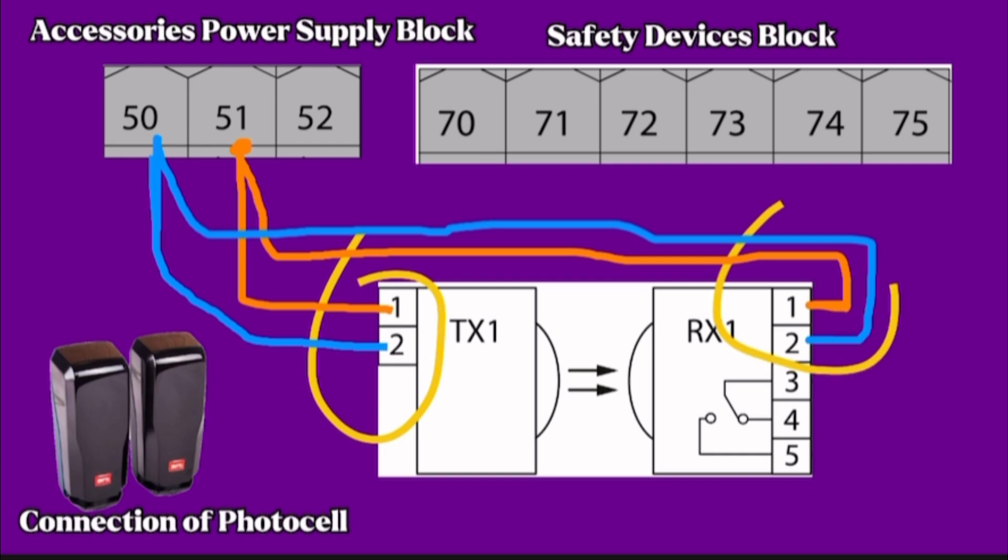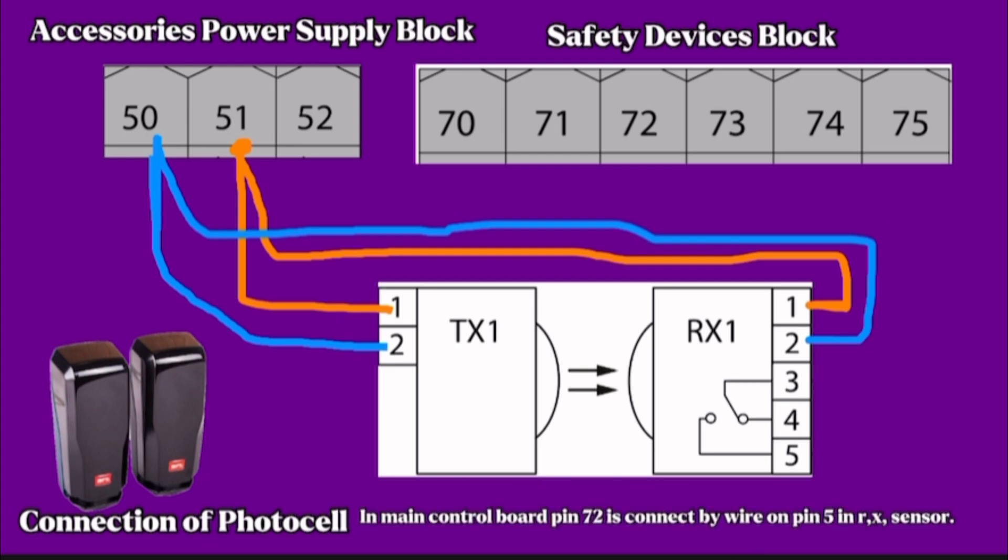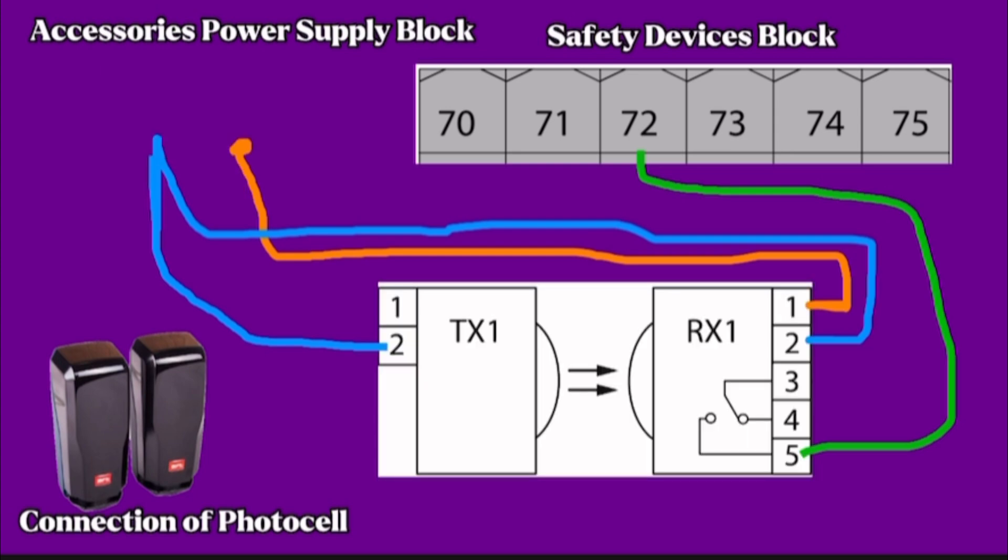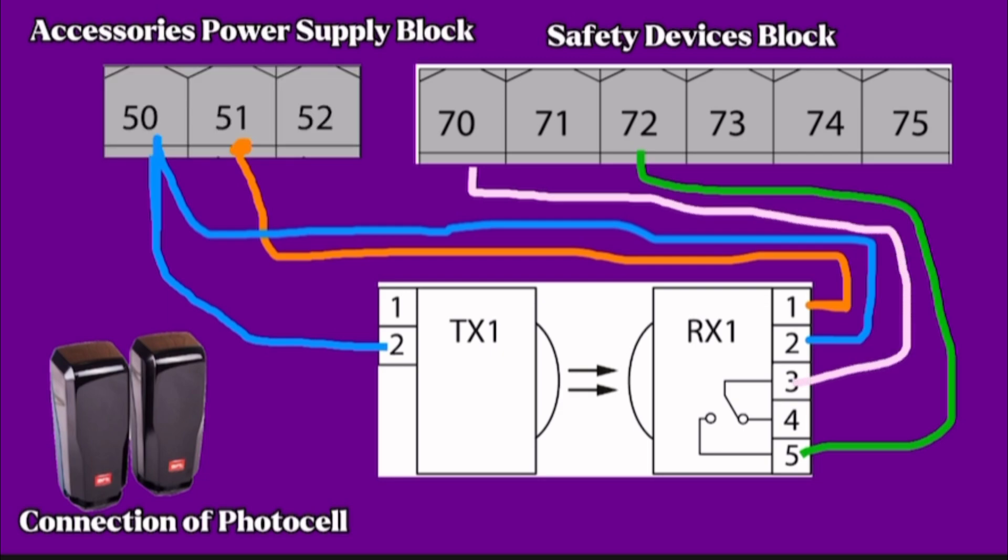In main control board, terminal 50 connects by wire to TX and RX pin 2. Now we have connected power supply of RX and TX. Pin 70 connects by wire on RX sensor pin 3. Pin 70 is common for this safety device block.